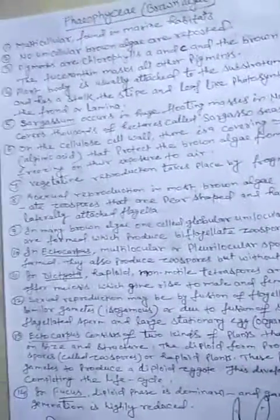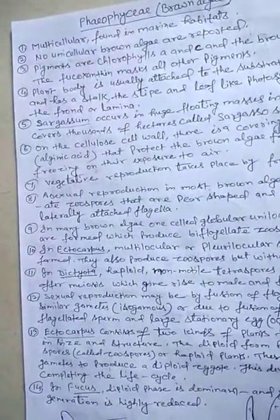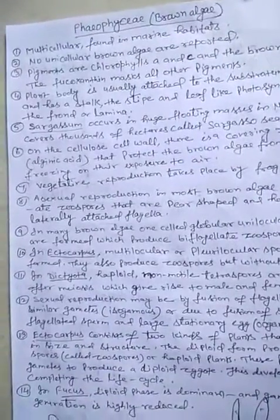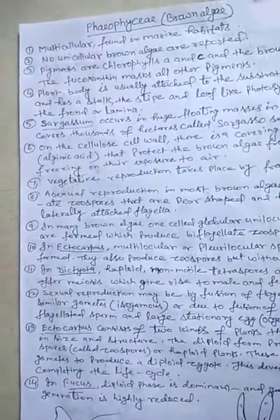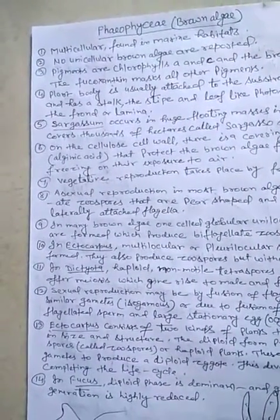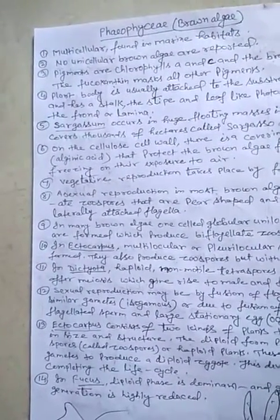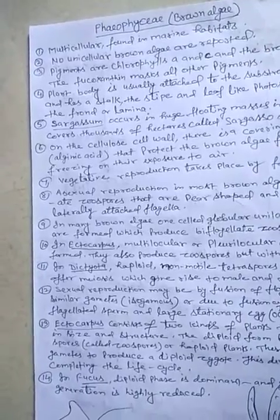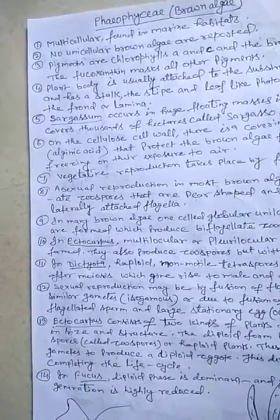that is alginic acid or algin, which protect the brown algae from drying and freezing upon their exposure to air. Vegetative reproduction takes place by fragmentation in the algae.